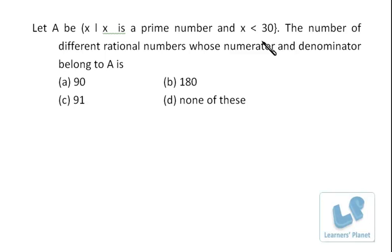That means we have to find out how many numbers are there where numerator and denominator are prime numbers. So first of all, how many prime numbers are there less than 30?